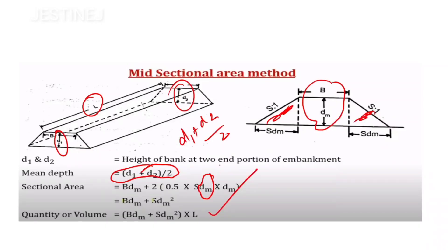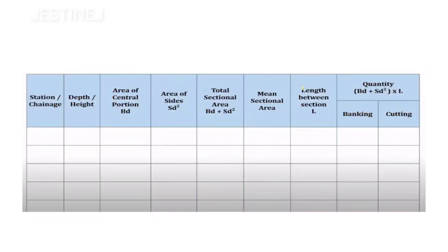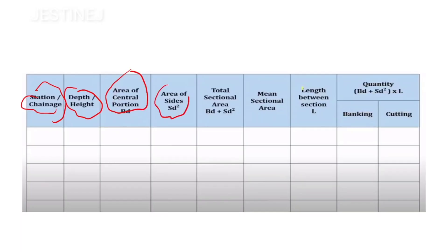The total volume is (b×dm + s×dm²) multiplied by the total length of the road section. A tabular column is used to organize calculations, with columns for station points, chainage, depth, area of rectangular portion, area of sides, total sectional area, mean sectional area, and total length. Sign conventions indicate banking or cutting.